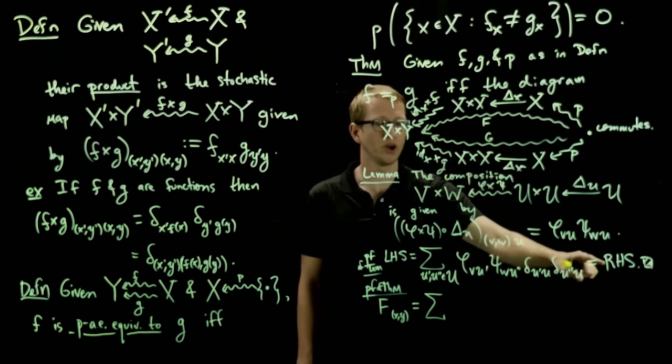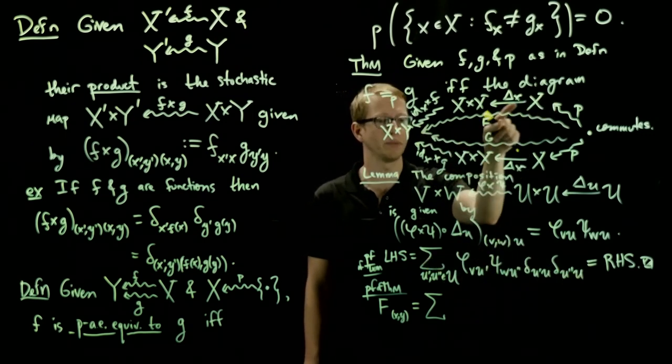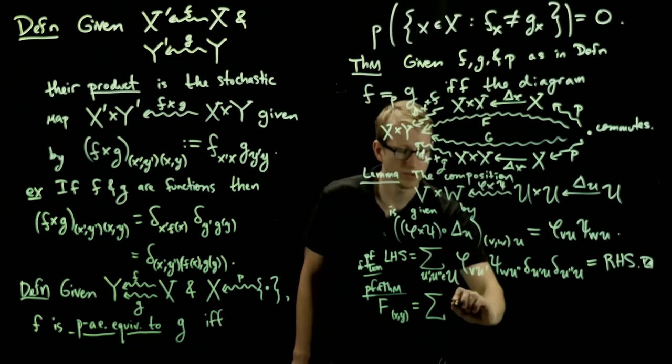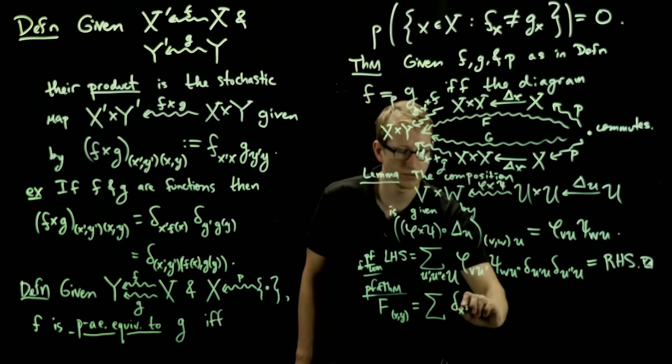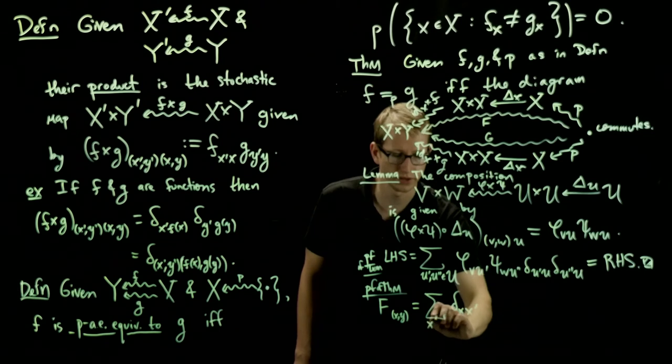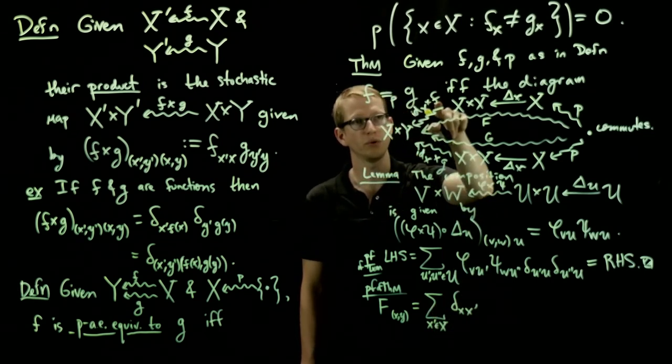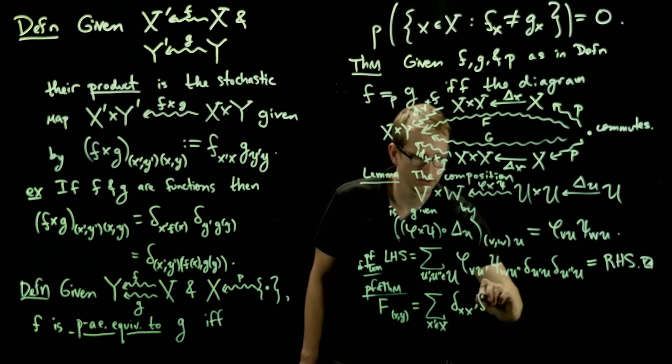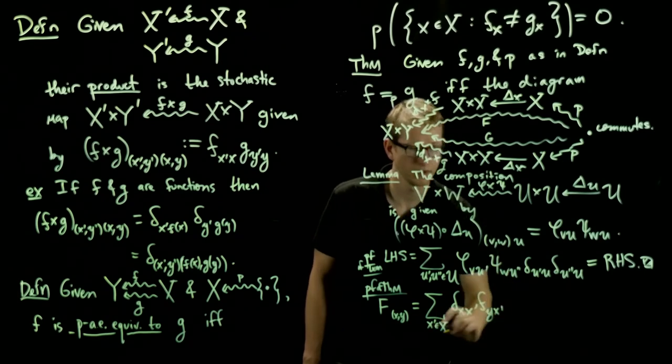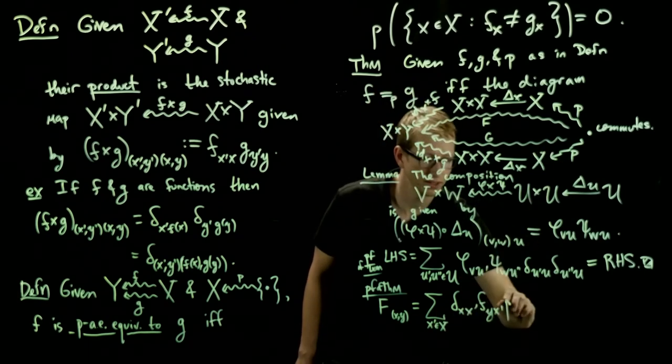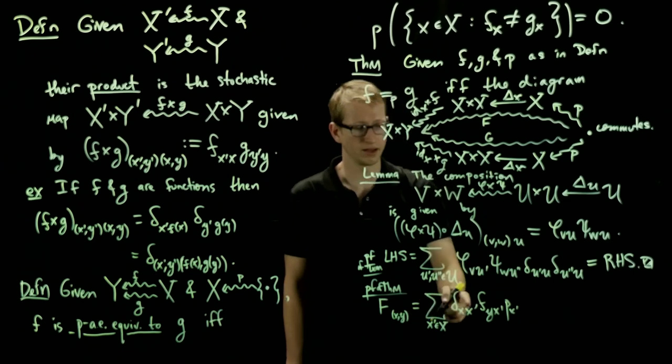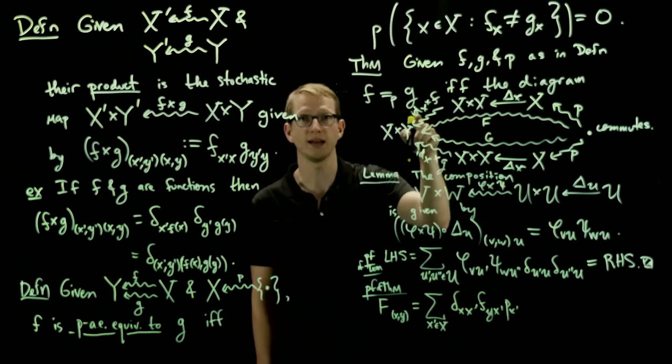And based on this formula, we already know what this map is. This map is the identity evaluated at that x', so we're summing over x' here. And then the right-hand coordinate is our function, is our stochastic map f. And that gives us f_yx'. And we multiply by our probability p(x').